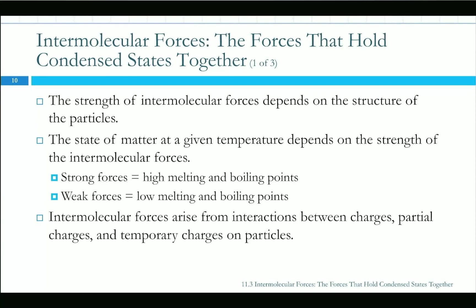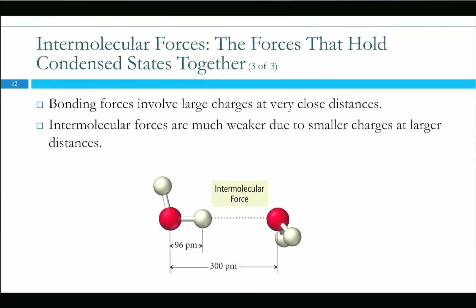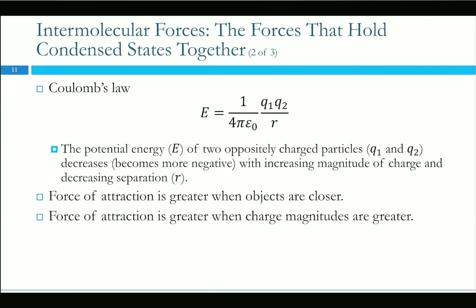We talked about intermolecular forces, and ultimately it comes down to the structure of the particles. This is why it's useful to be able to quickly predict the shapes of molecules. Polar substances have stronger intermolecular forces; nonpolar substances don't have those forces and are therefore weaker. Things that are polar generally have high melting and boiling points; weak forces give generally low melting and boiling points.